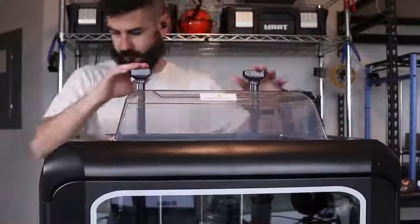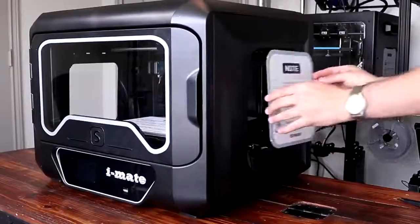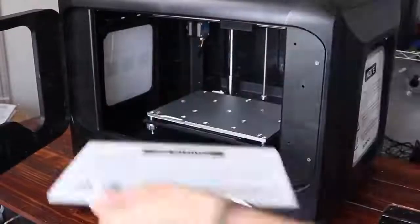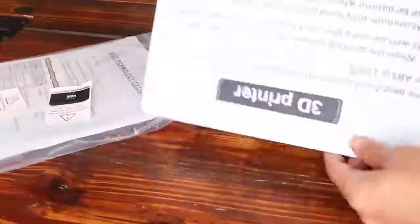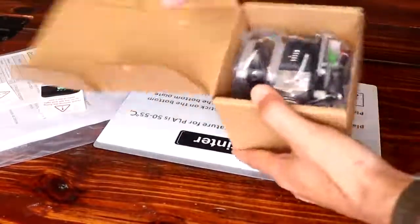The printer advertises it has quiet drivers for silent printing, a flexible metal build plate, and an overall well-built frame. The printer also comes with a lot of extras including a secondary build plate, plenty of spare parts, and even an entirely separate extruder with a 0.2 millimeter diameter nozzle.